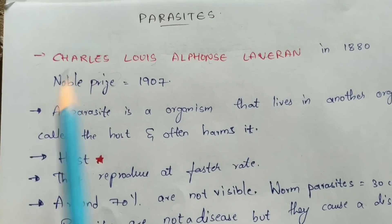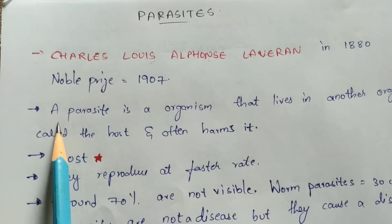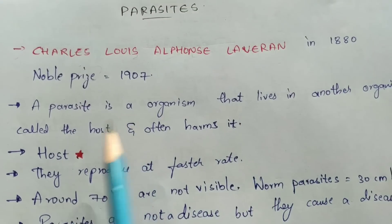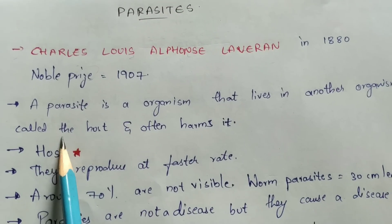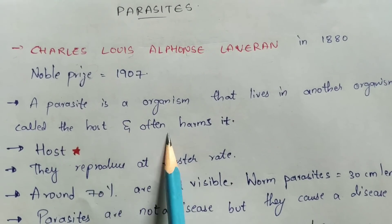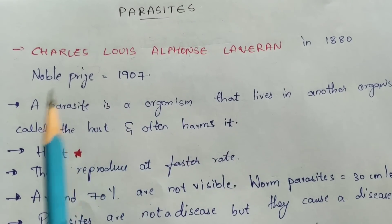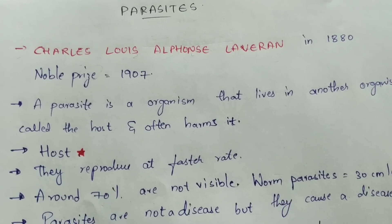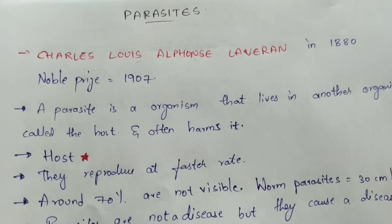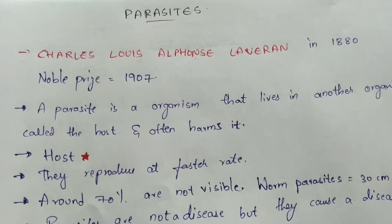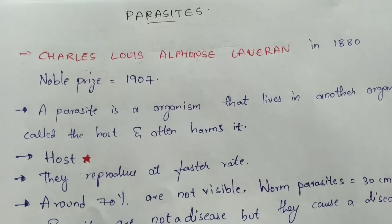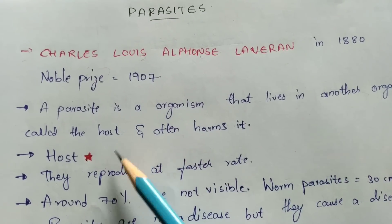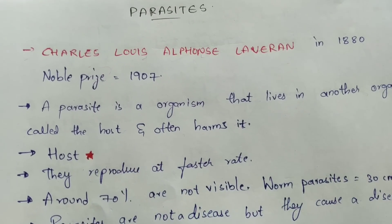The definition given by the scientist: a parasite is an organism that lives in another organism, known as the host, and often harms it. The main function of the parasite is essentially to harm or kill that host organism — the host being humans or animals.